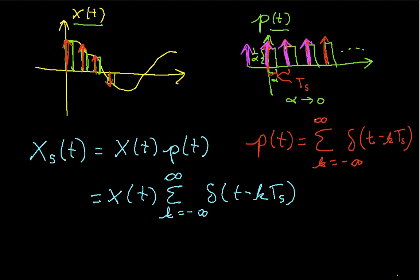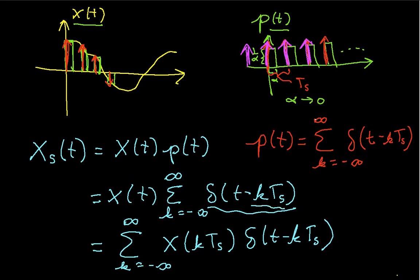And then, using the fact that each of these delta functions is 0 everywhere except at k t sub s, I can write this as a summation, again, going from minus infinity to infinity, of x evaluated at k t sub s times delta of t minus k t sub s. And again, the reason I can do this is because a given delta function is 0 everywhere except at k t sub s. And so, when I multiply it by x, the product is 0 everywhere except at k t sub s.